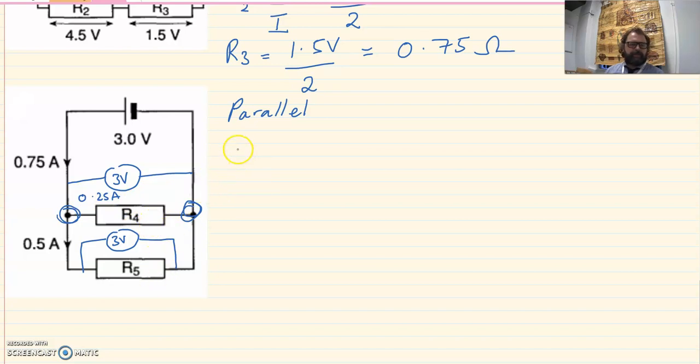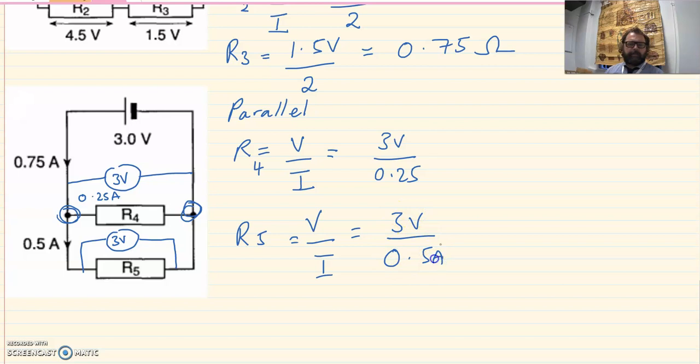And if we were to calculate these resistors, we'd do exactly the same as we did in the last question. Remembering that for R4, the voltage will be three and the current is 0.25. And for R5, the potential difference, the voltage is three volts and the current is half an amp. So for R4, resistance is 12 ohms. And for R5, the resistance is half that. Notice the smaller resistor, a bigger current can flow through it in a parallel circuit for the same amount of volts.